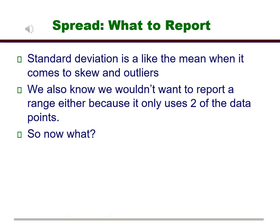So let's assume we have either skew or outliers. We showed earlier that it didn't make much sense to report a mean and the same holds for standard deviations. So in a typical situation like this, we wouldn't want to report the range either because it doesn't use all of the data. So what are we going to do in this case?